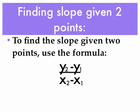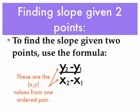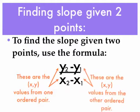The little 2's and 1's simply tell us that y sub 2 and x sub 2 are going to come from the same ordered pair, and y sub 1 and x sub 1 are also going to come from the same ordered pair. So y sub 2 and x sub 2 are x and y values from one ordered pair, and y sub 1 and x sub 1 are x and y values from the other ordered pair.